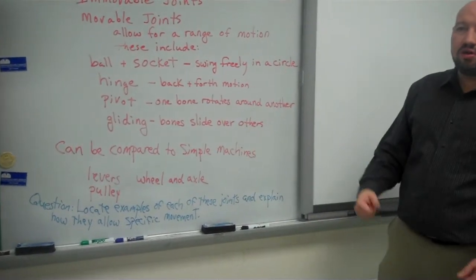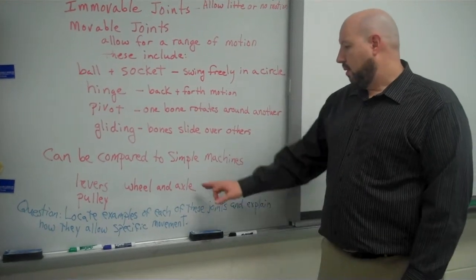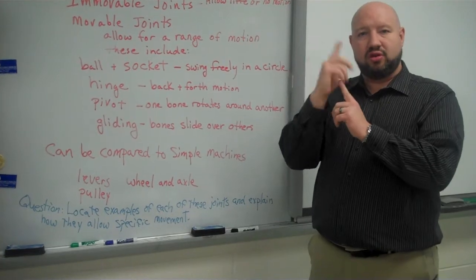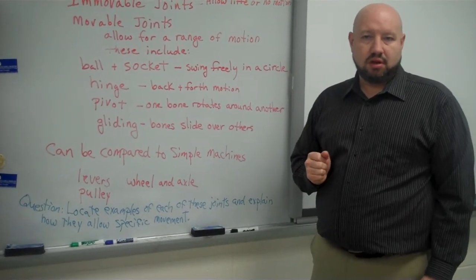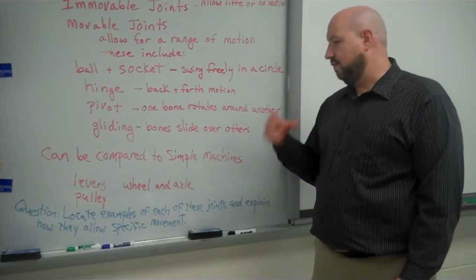A pulley. A pulley, you're dealing with the muscles and the movement. Okay. Wheel and axle. Okay, you've got the pivoting around that central axis. Okay, so that's how you get that wheel and axle. So, you're dealing with the three different simple machines.